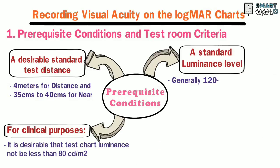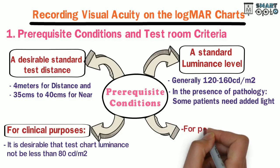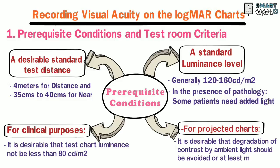A standard luminance level of generally 120 to 160 candelas per meter squared is needed. In the presence of pathology, some patients need added light. For projected charts, it is desirable that degradation of contrast by ambient light should be avoided or at least minimized.